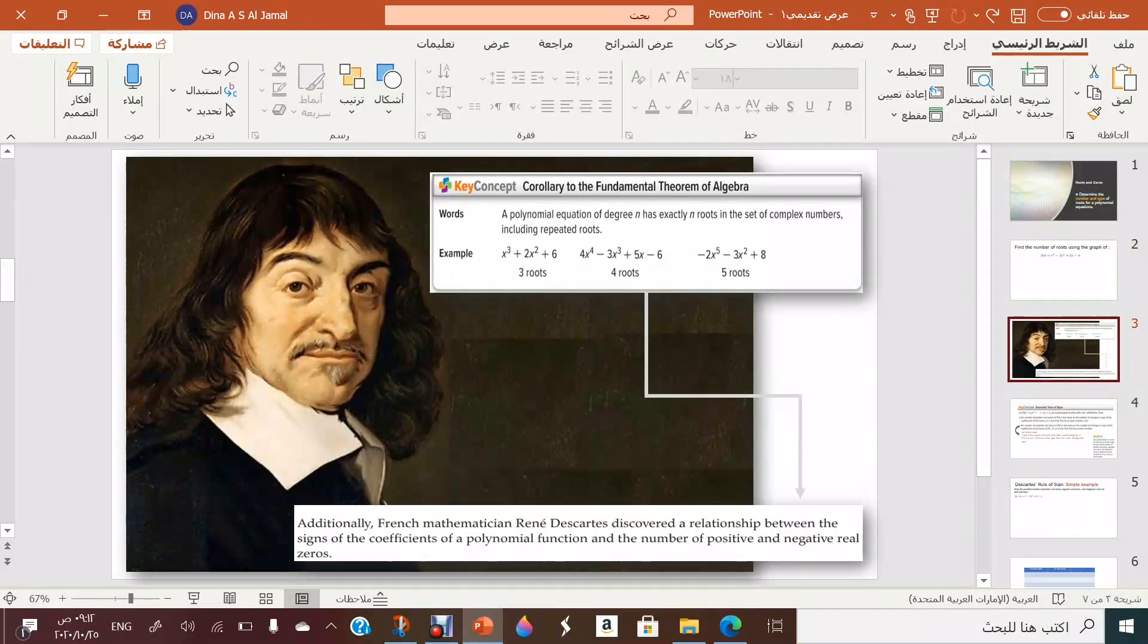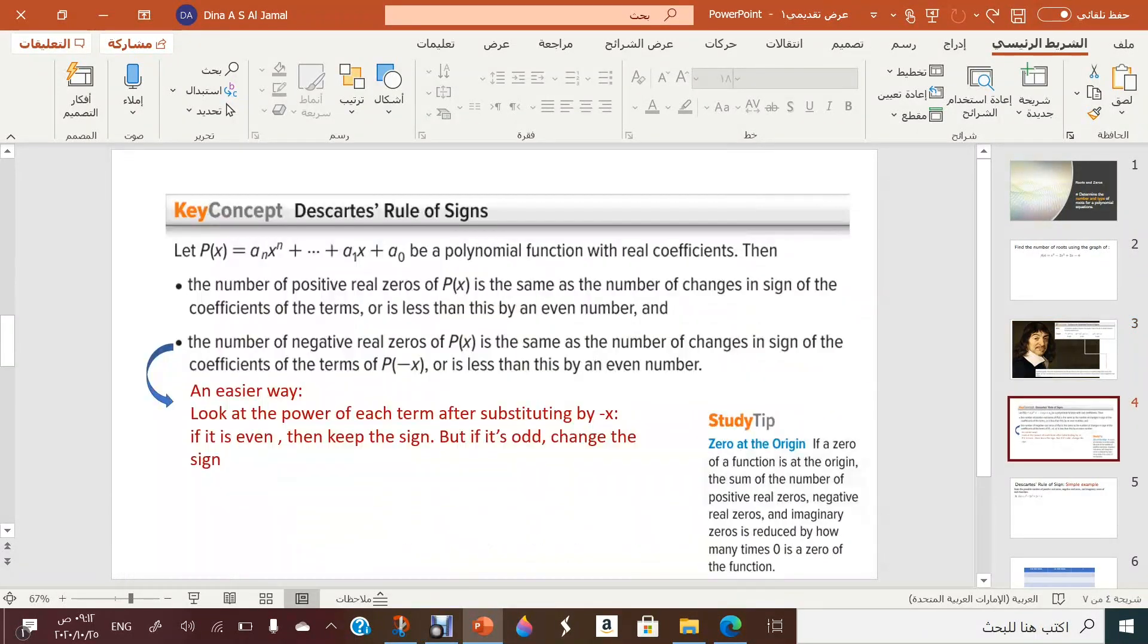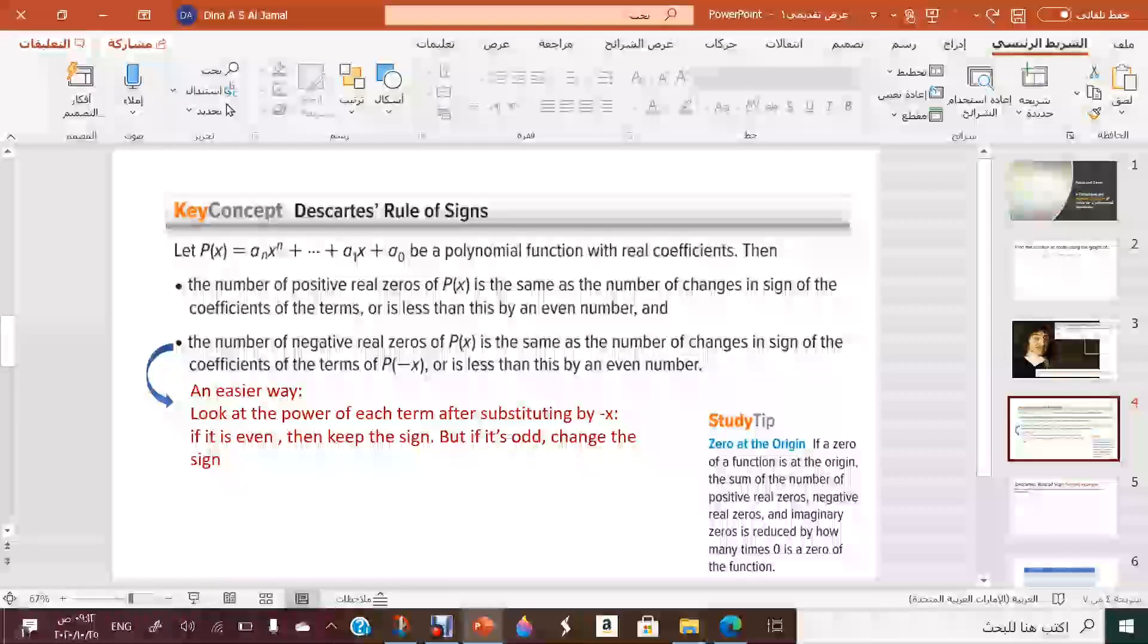So a mathematician called Rene Descartes discovered a relationship between the signs of the coefficient of a polynomial and the number of positive and negative real zeros. And his rule is called the rule of signs. So given a polynomial equation or function, he was determining the number of roots and zeros using the change of sign. So let's read this together. Pause and read it.